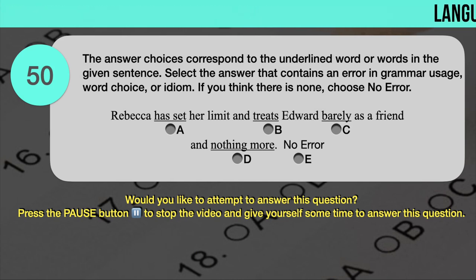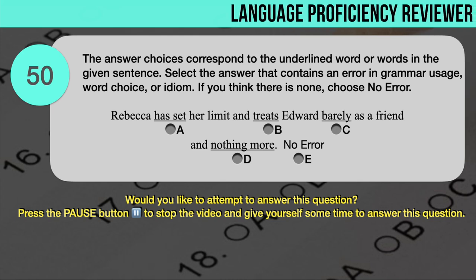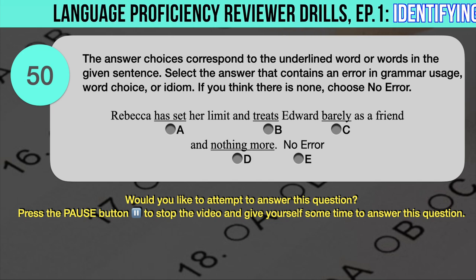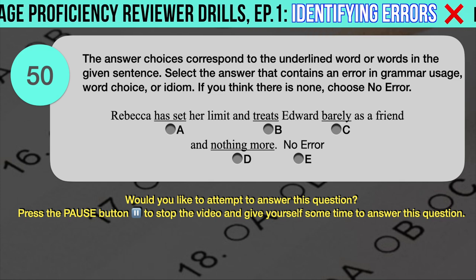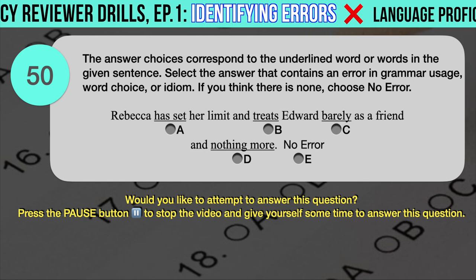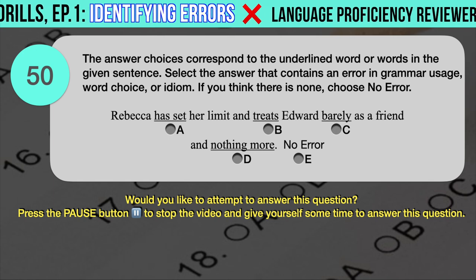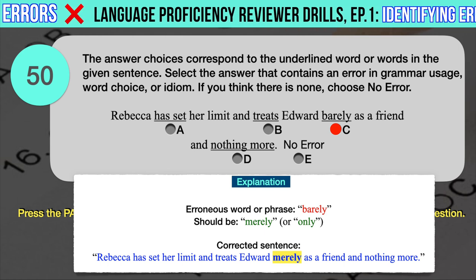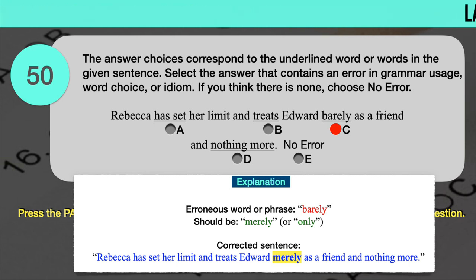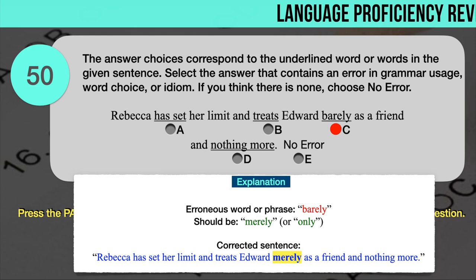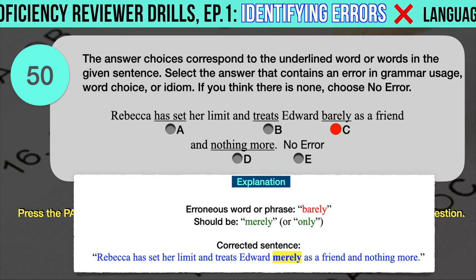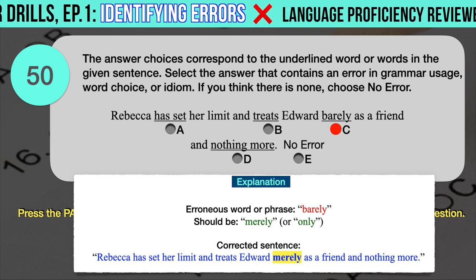Drill question number 50. 'Rebecca has set her limit and treats Edward barely as a friend and nothing more.' The underlined words are: A. Has set, B. Treats, C. Barely, D. Nothing more. The correct answer is C. 'Barely' should have been 'merely' or 'only.' The context suggests Rebecca considers Edward only as a friend; 'merely' means 'only,' whereas 'barely' means 'almost not.' Correct sentence: Rebecca has set her limit and treats Edward merely as a friend and nothing more.